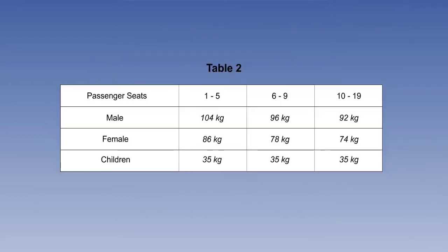Table 2 is the mass value for passengers for aeroplanes with 19 seats or less and includes hand baggage. Articles such as an overcoat, umbrella, small handbag or purse, a book or small camera are not considered as hand baggage. If no hand baggage is carried, or where it is accounted for separately, 6 kilograms may be deducted from the table mass value.